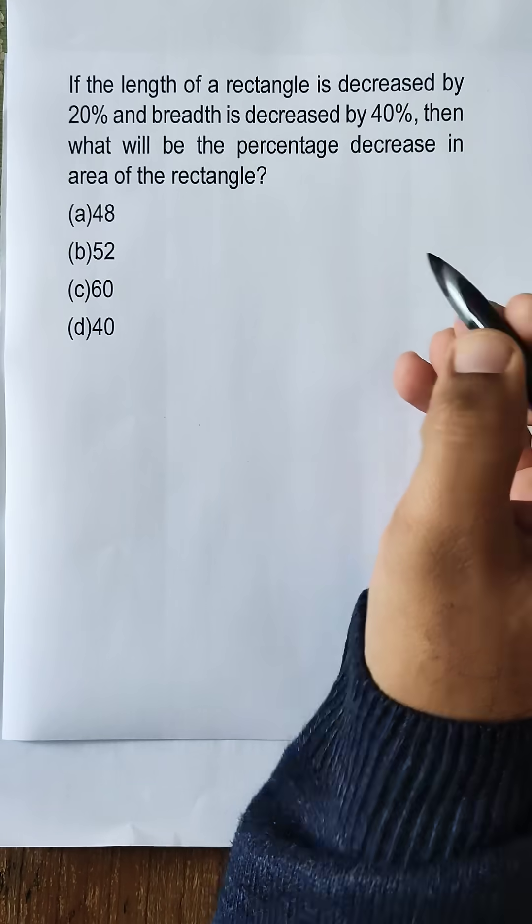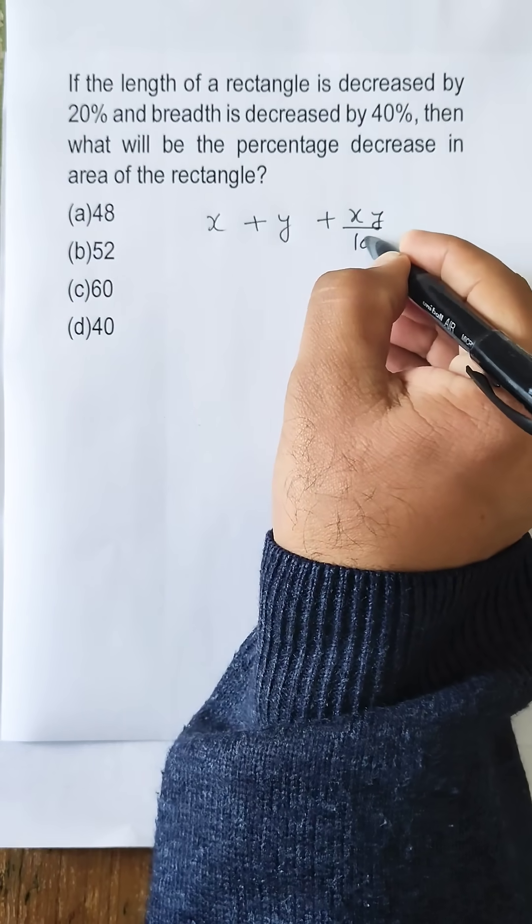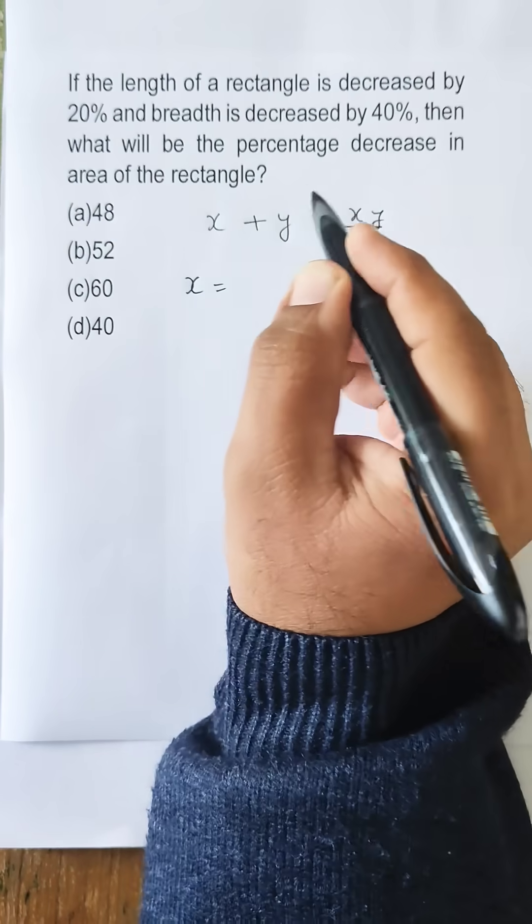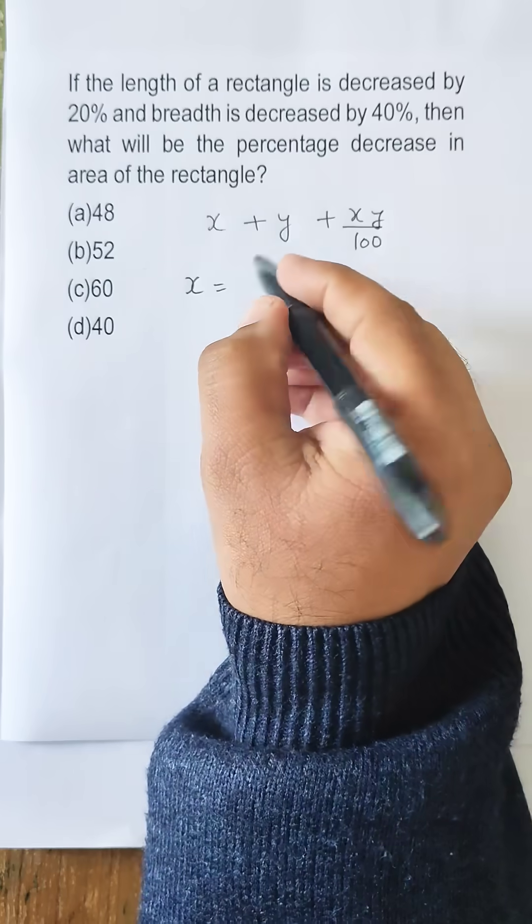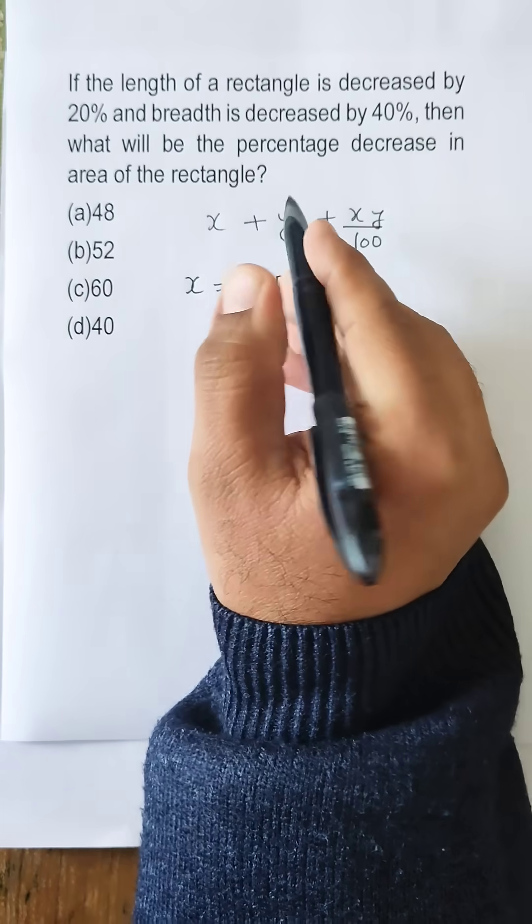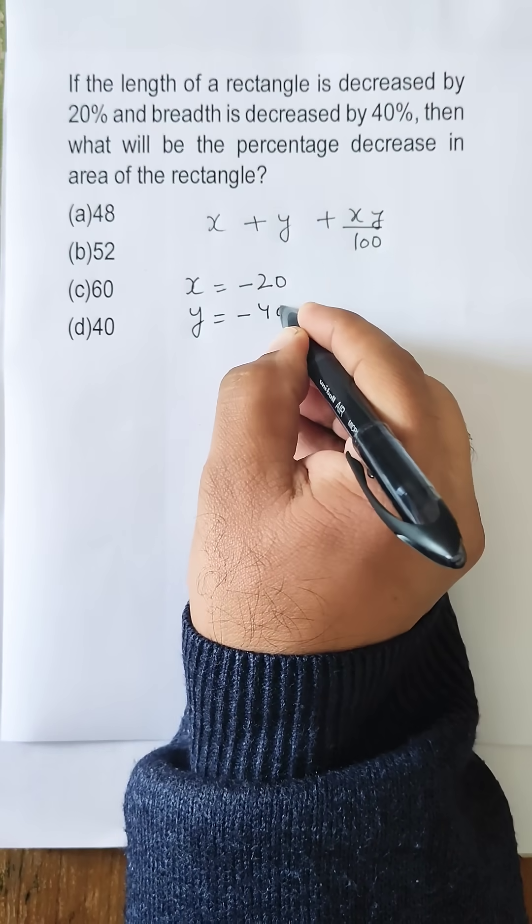We will be using the formula x plus y plus xy upon 100, where x will be the length decrease of minus 20, since the length is decreased by 20%. The breadth is also decreased by 40%, so we will be taking y as minus 40.